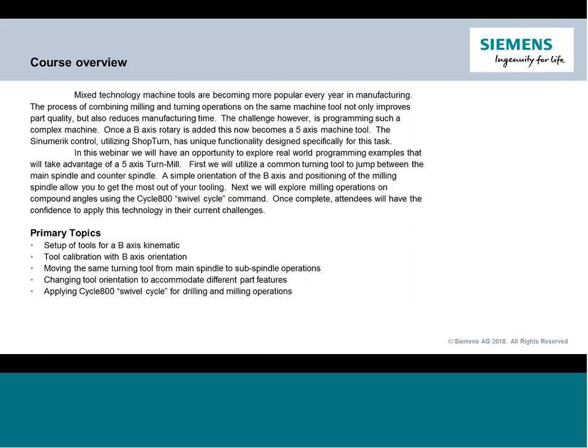Today we're talking about B-axis technology lathes, or turn-mill technology lathes. We're going to look at the kinematics, get your head around what we mean by a B-axis and a turn-mill machine tool. We're going to get into how we handle the machine in an operation — setting up an operation scenario, setting tools, calibrating tools. Then we're going to look at a live programming example going through all the typical operations you would do when programming a machine with this kind of technology.